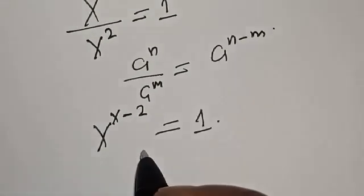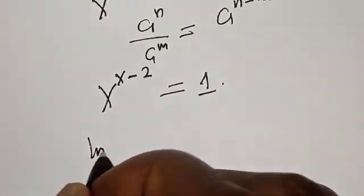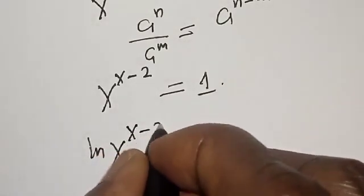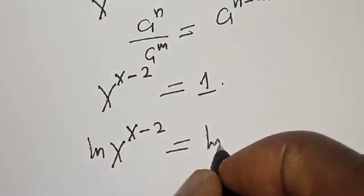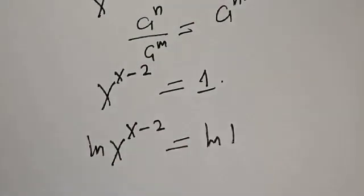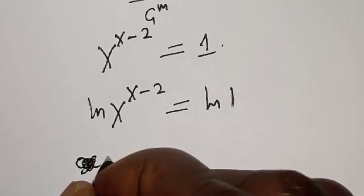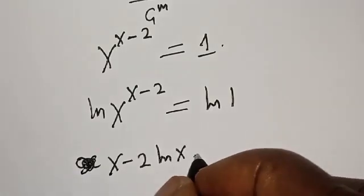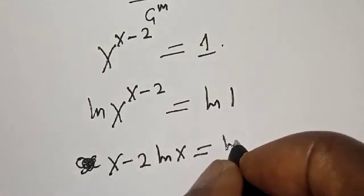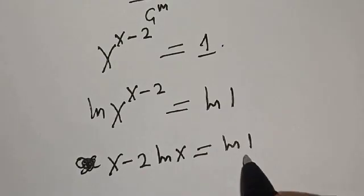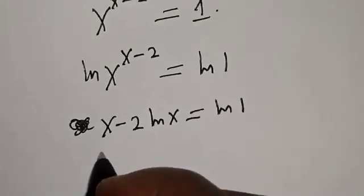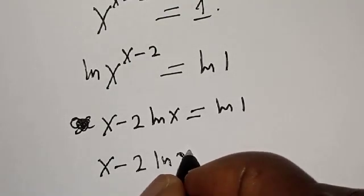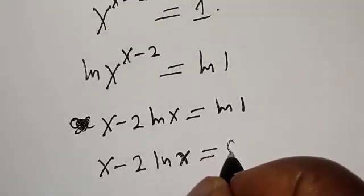Now let's take the log of both sides. We have the natural log of s raised to power s minus two, is equal to the natural log of one. Then we have s minus two times natural log of s, is equal to zero — because natural log of one is zero. So s minus two times natural log of s is equal to zero.